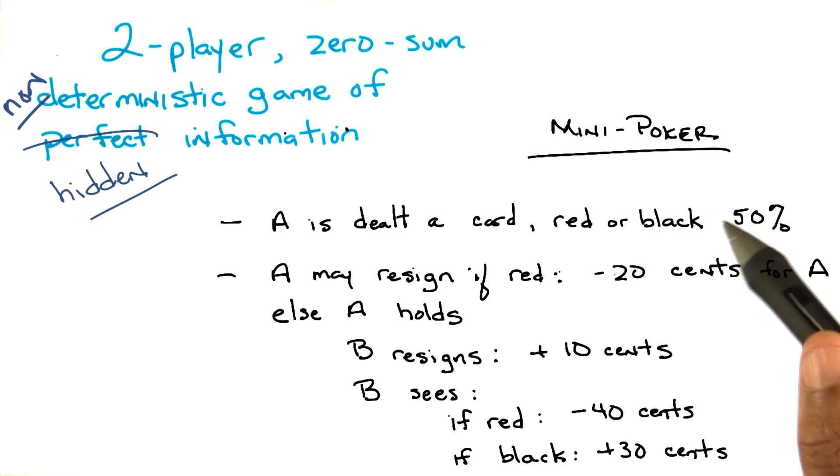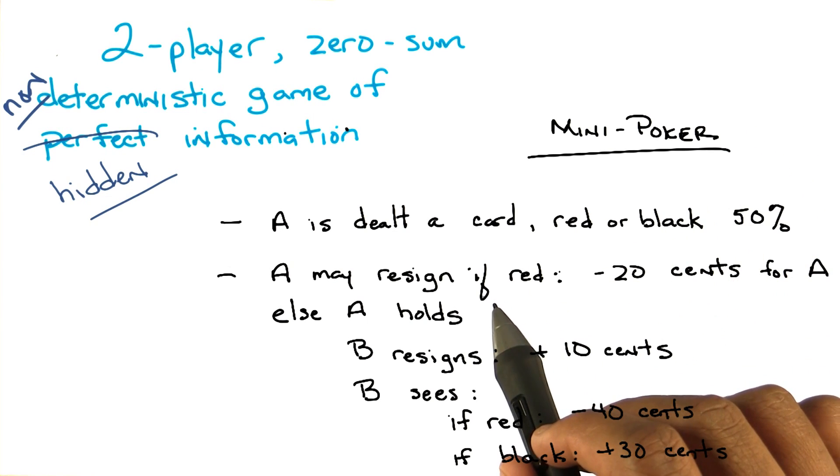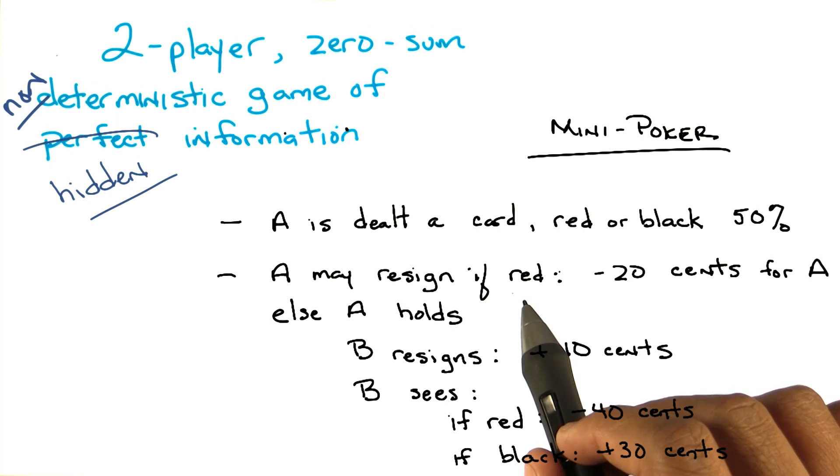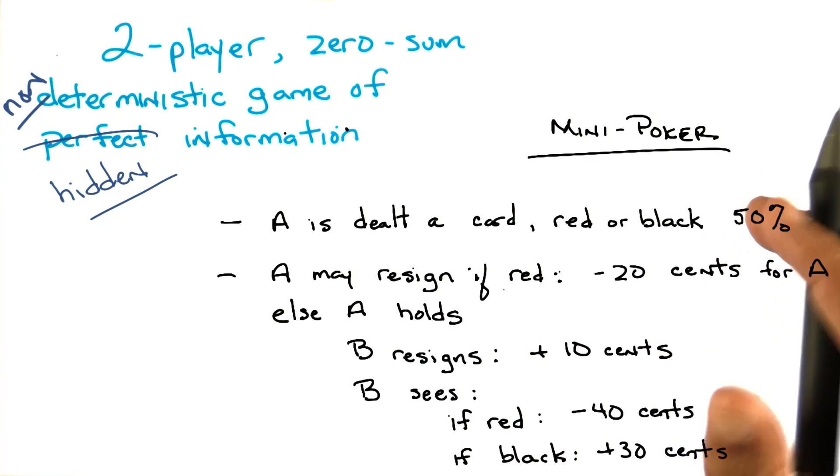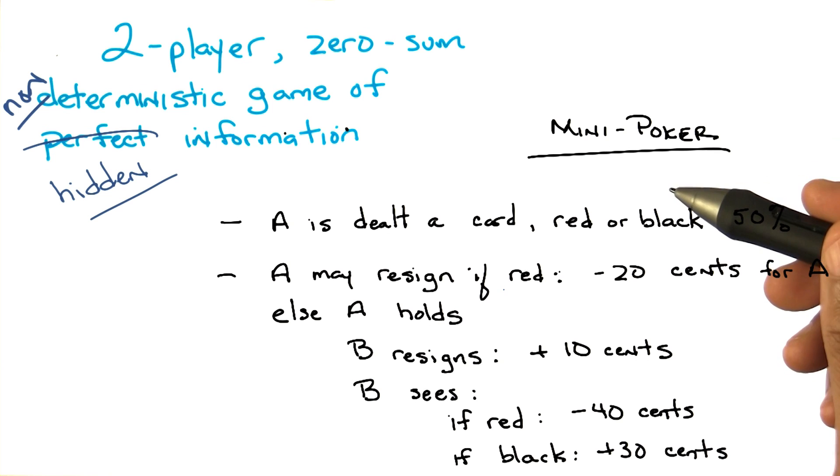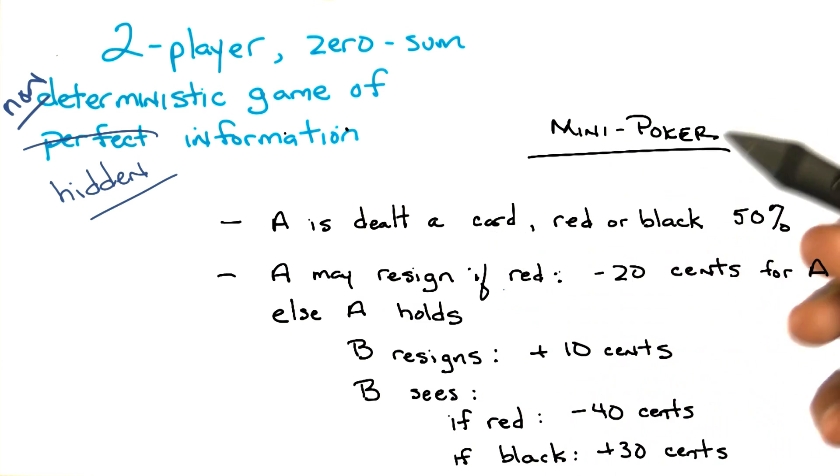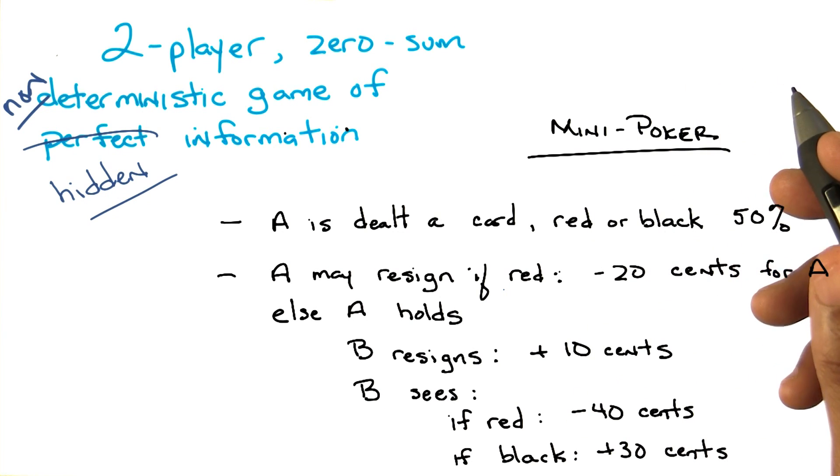There's a minor little detail here, which isn't that important, but notice it's written that A may resign if it's red. Basically, A will never resign on a black card, because it just doesn't make any sense. And so there's really no point in writing it out. Because black is always good, sort of, nothing bad can happen to A if A gets a black card. So there's really no point in writing anything out. But that's just a minor detail. Regardless, these are the rules. You got it? Sure.